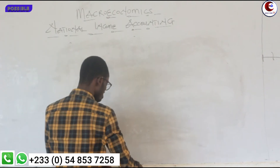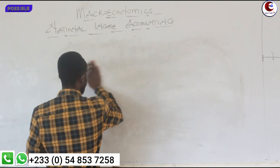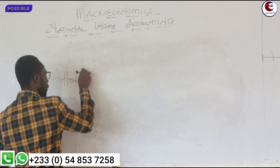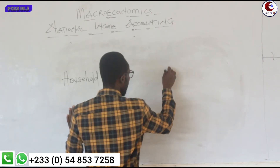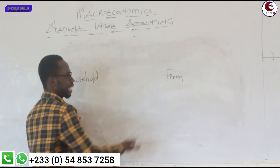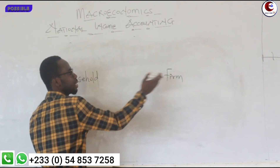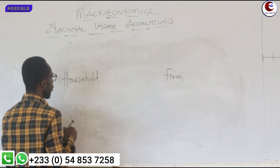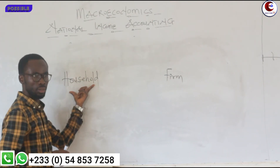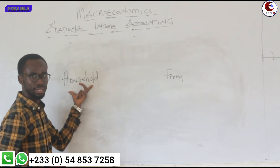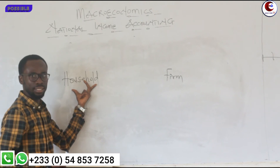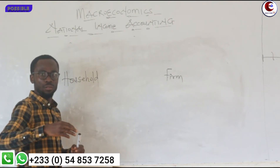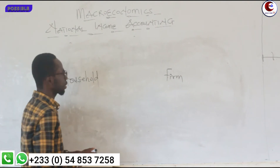Now, the circular flow. We are saying that we have our household here. We have our firm here. We have household and we have firm. And then we have two markets. We have product markets and then we have factor markets. The household sells the factors of production on the factor markets.